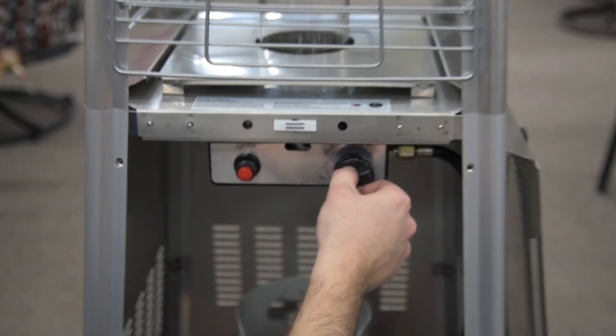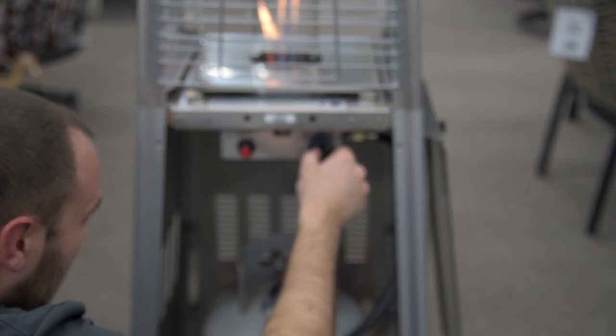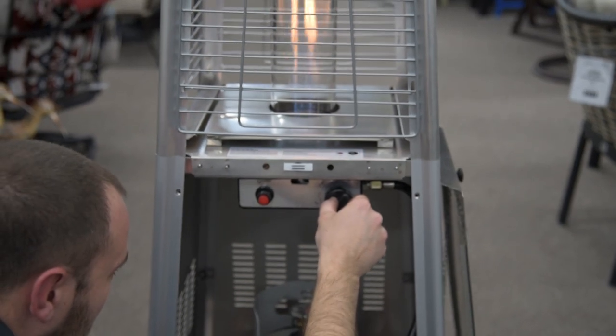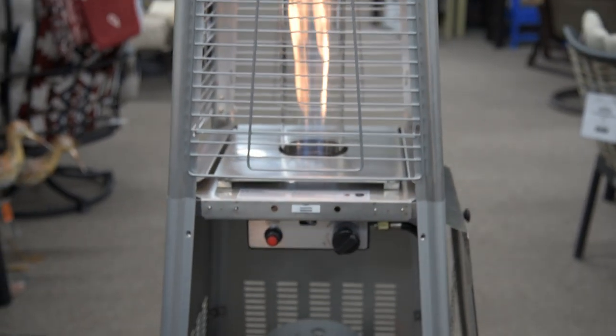So now you can push the knob in slightly and bring it down just a little bit. And that's how you light a pyramid heater.